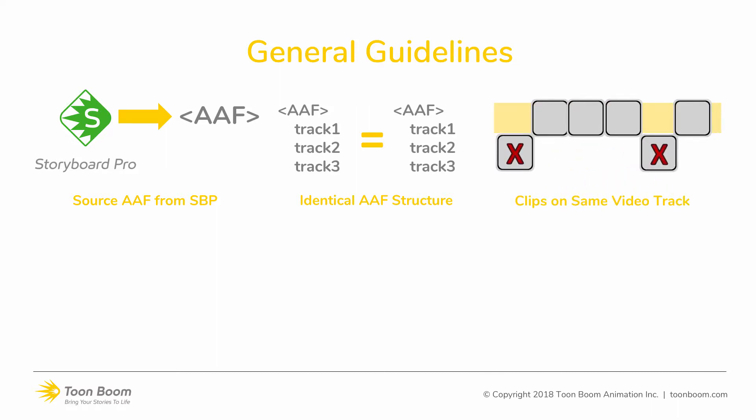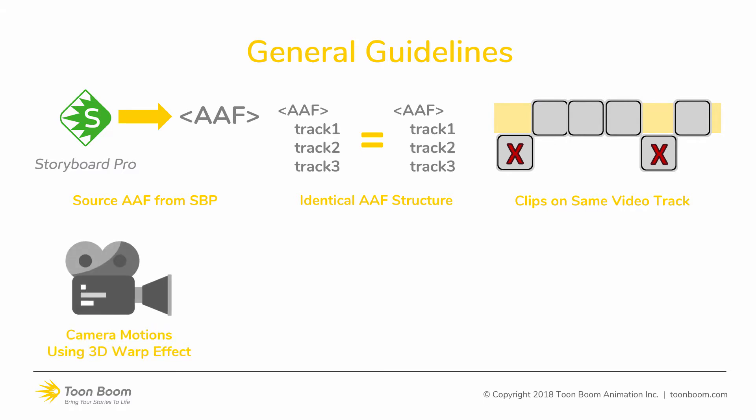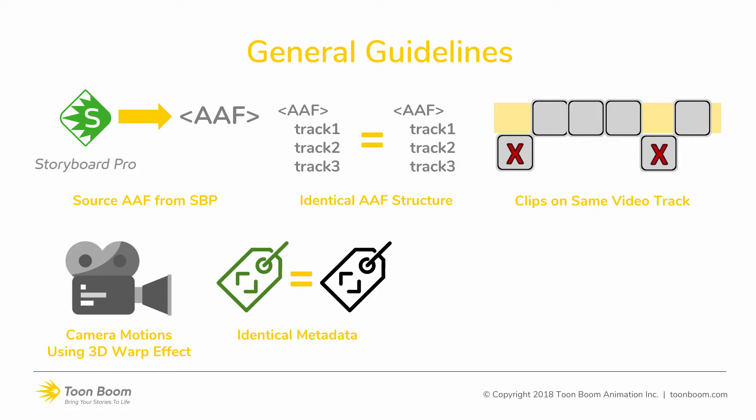Next, the clips that are representing a panel in Storyboard Pro all need to be on the same video track. If you have clips that are on other video tracks, they will simply be ignored when conforming back in Storyboard Pro. Camera motions will be exported from Storyboard Pro using a 3D warp effect. Therefore, if you want to add more or modify camera motions in Avid Media Composer, you will also need to use the 3D warp effect. Any metadata that was exported from Storyboard Pro needs to be identical and not be altered in Media Composer — that information is critical to import back into Storyboard Pro.